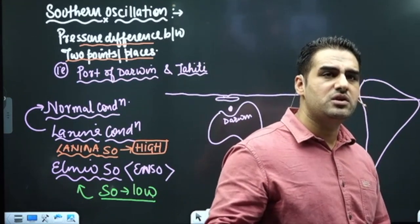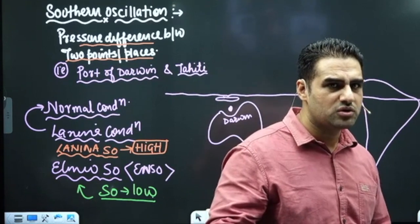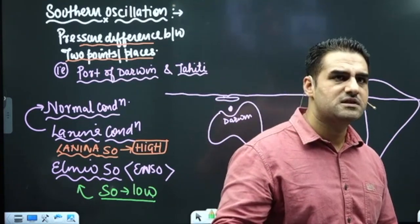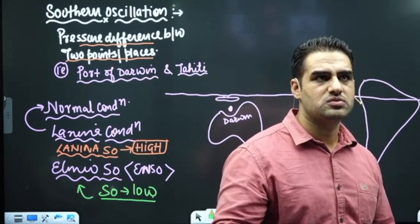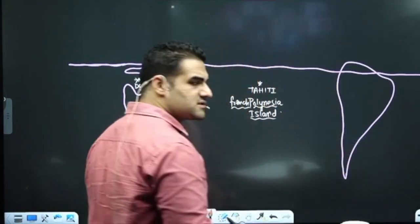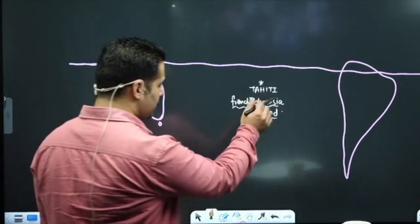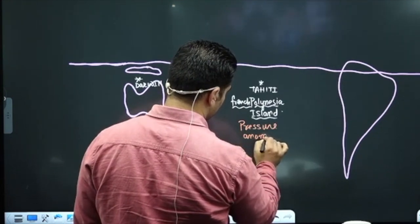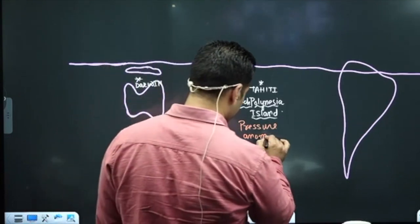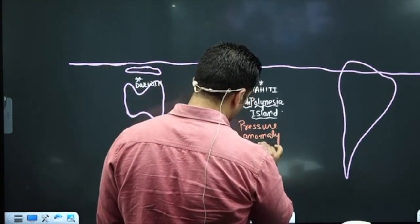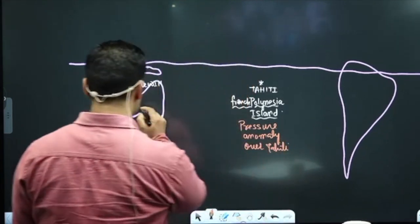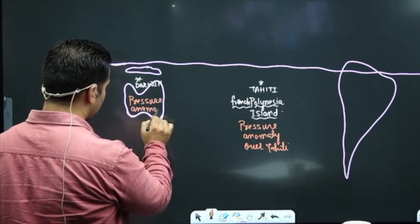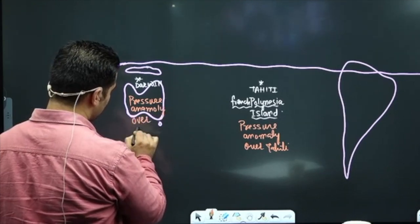When it is El Niño Southern Oscillation, it is bad for the Indian Monsoon. If it is La Niña Southern Oscillation, it is good for the Indian Monsoon. Southern Oscillation is the pressure difference between Tahiti and Darwin — specifically, it is the pressure anomaly over Tahiti minus the pressure anomaly over Darwin.